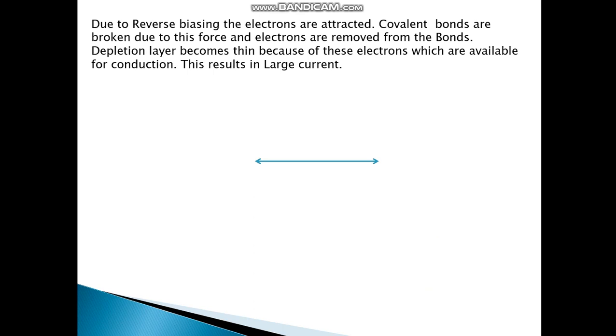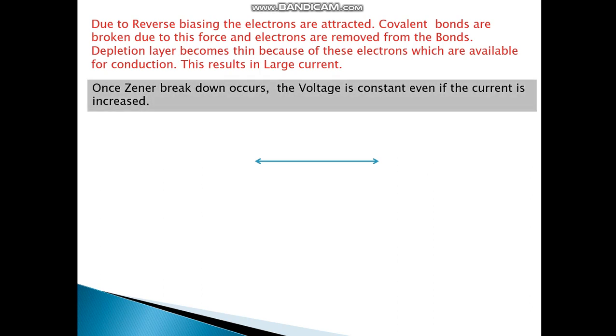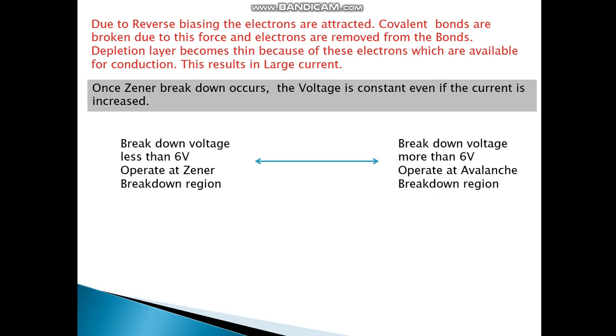Due to the reverse biasing, the electrons are attracted. Covalent bonds are broken due to this force and electrons are removed from the bonds. Depletion layer becomes thin because of these electrons which are available for conduction. This results in a large current. Once Zener breakdown occurs, the voltage is constant even if the current is increased. Breakdown voltage is less than 6V, operated in the Zener breakdown region. Breakdown voltage more than 6V, operated at the avalanche breakdown region.